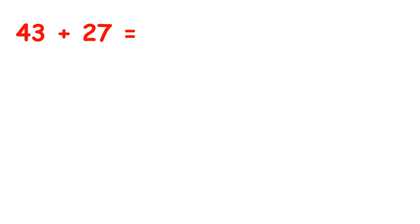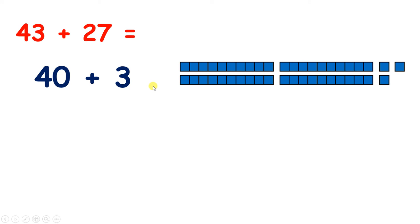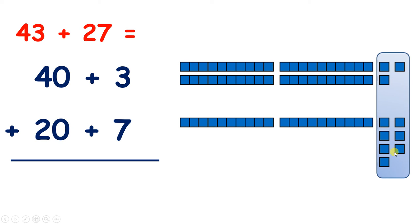Now pause the video, and see if you can add 43 and 27 by partitioning, like we've been doing. So we have 40 plus 3: 4 tens and 3 units. And we have 20 plus 7: 2 tens and 7 units. We're going to add these, starting with our units. So we have 3 plus 7, which makes 10.